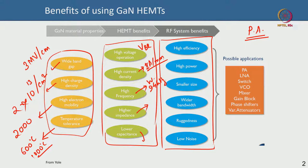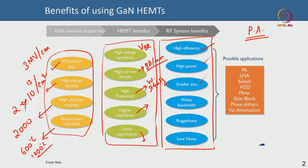You have lower capacitances because of the design it enables. At the system level, for a power amplifier, you can have higher efficiency, higher gain, and higher power density. The footprint reduces, and because the thermal conductivity is reasonably good — as good as silicon, not as bad as sapphire — it is a decent benefit. You can also go to wider bandwidths because you have a larger frequency range over which you can get power.